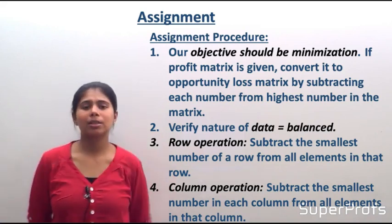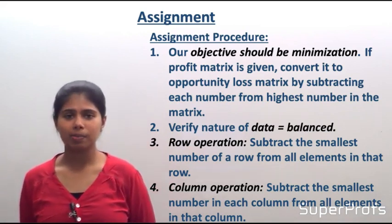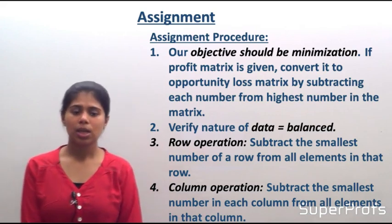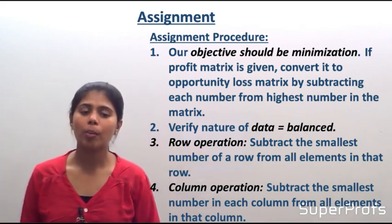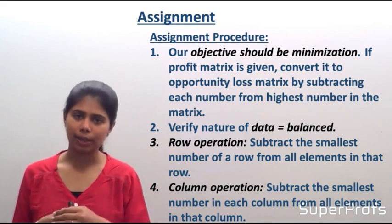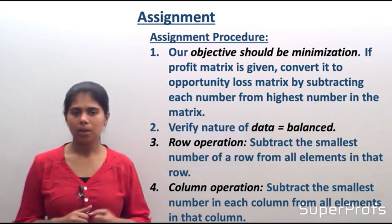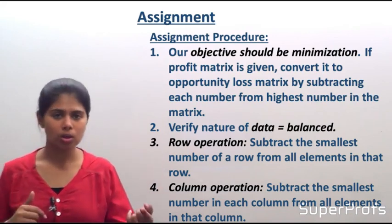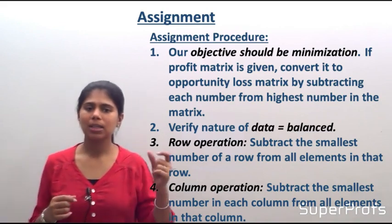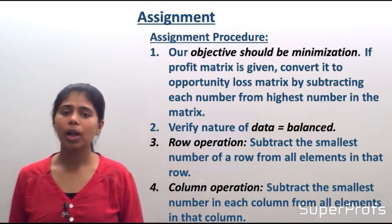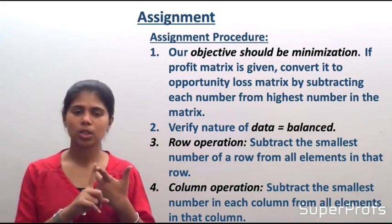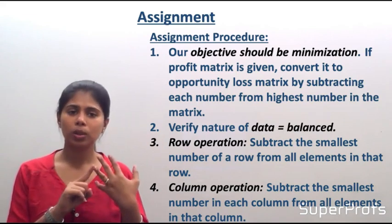Once you ensure that your objective is minimization and your data is balanced, you do a row operation. Row operation means subtracting the smallest number in a row from all the elements in that row. The next step is the column operation — similar to row operation, it means subtracting the smallest number in each column from all elements in that column. So: first check minimization, second check data is balanced, third do row operation, fourth do column operation.